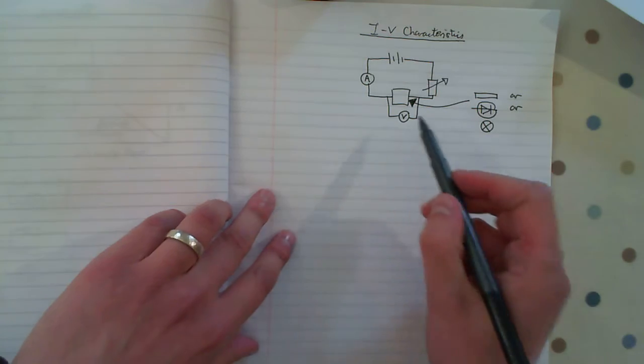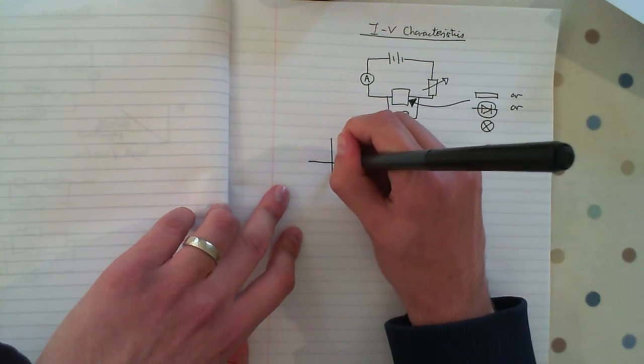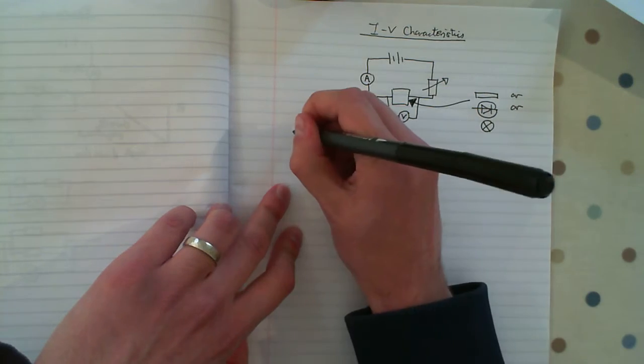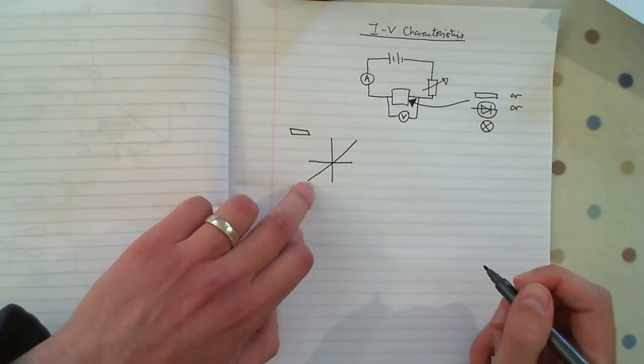We get these ammeter and voltmeter readings and we plot them on the graphs. So for the ohmic resistor, you'll get a nice directly proportional graph.